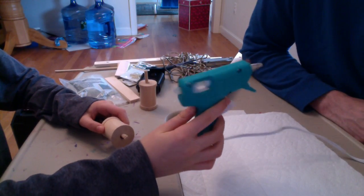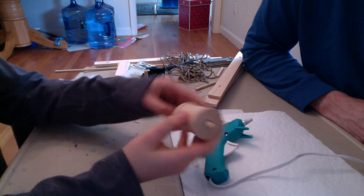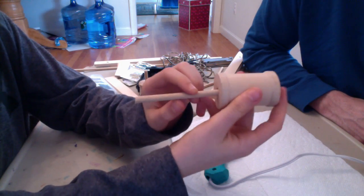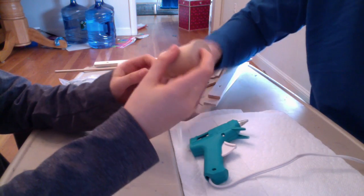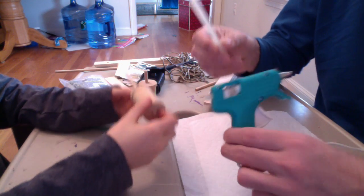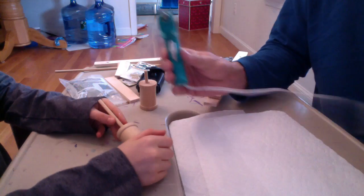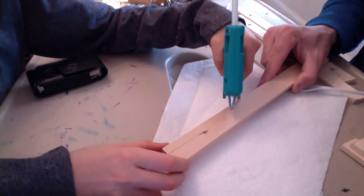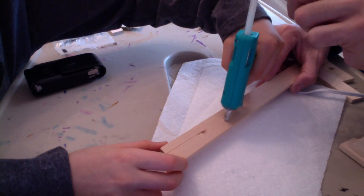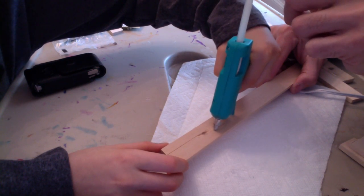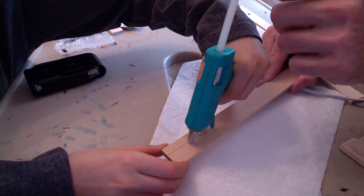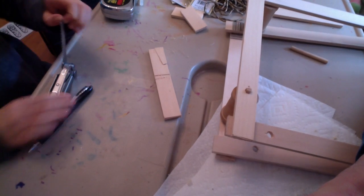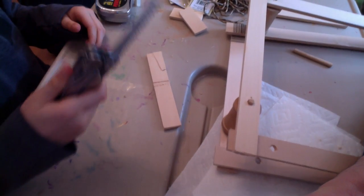So here we have our hot glue gun to secure the lever part. And as I will do that in just a minute. Okay, so now I am gently, gently hot gluing our broken hole piece of wood. That's one jagged saw.